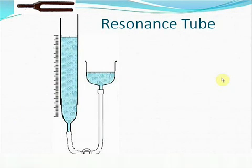Now let's see how we can make use of a resonance tube, a device used to determine the velocity of sound. This device is used to measure the velocity of sound using the phenomenon of stationary waves.